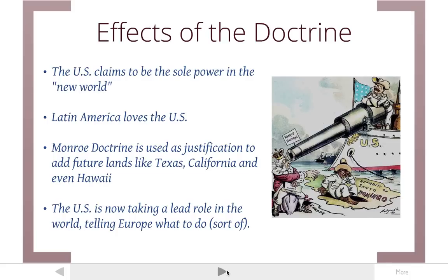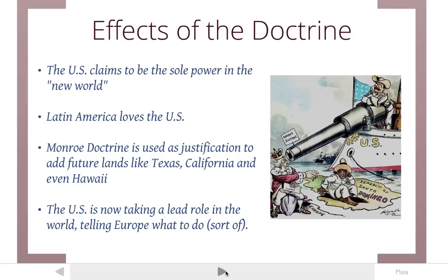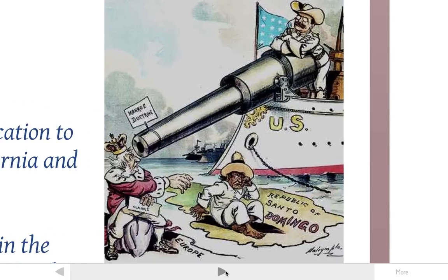The biggest effect is that the United States is now taking a lead role in foreign affairs — it's telling Europe what to do. Without England's backing they might not have listened, but definitely the United States is now feeling stronger and telling people who's boss. Here is a cartoon — actually from the early 1900s — showing the United States pointing a big gun at a European king saying stay away from Puerto Rico. The Monroe Doctrine was used even into the 1960s.